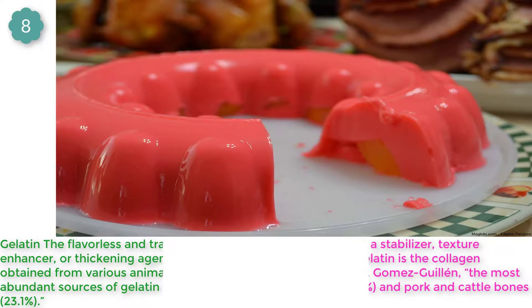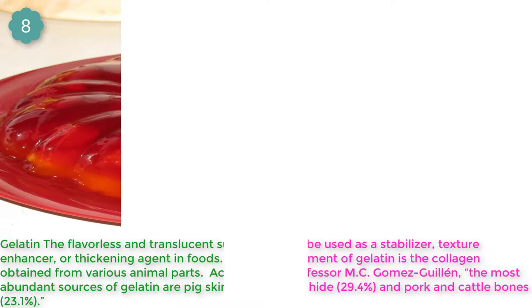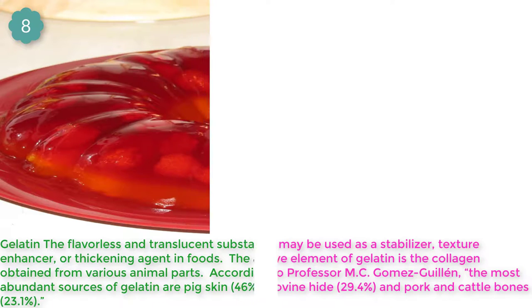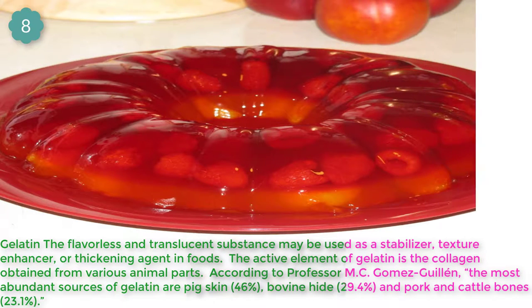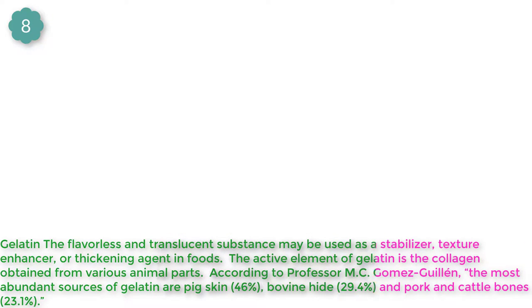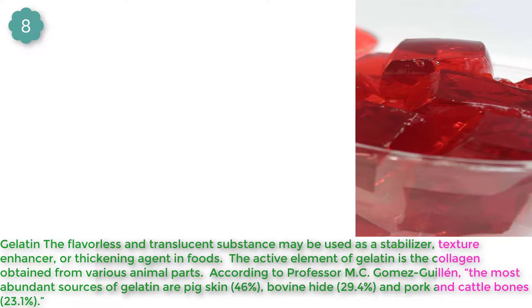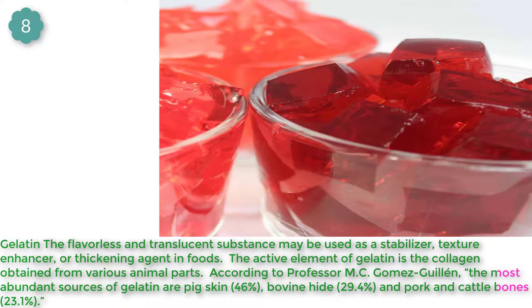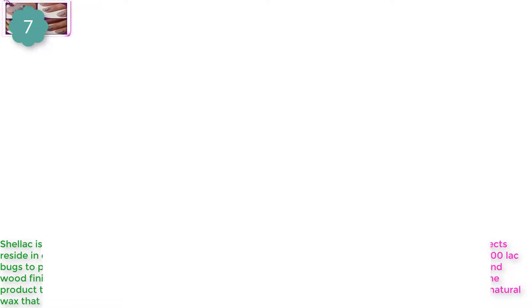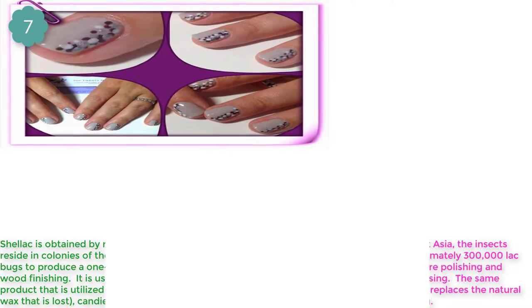Number 8: Gelatin. The flavorless and translucent substance may be used as a stabilizer, texture enhancer, or thickening agent in foods. The active element of gelatin is collagen, obtained from various animal parts.